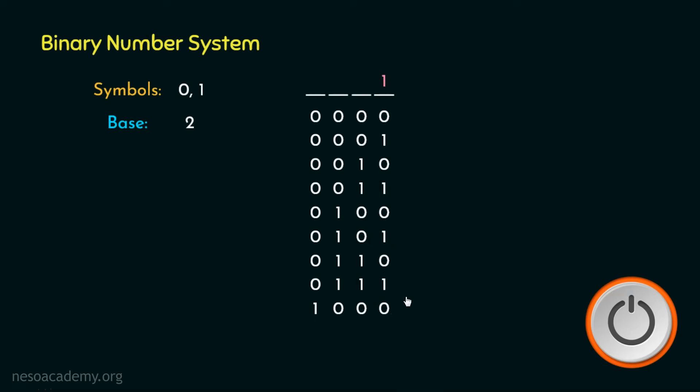Coming to the next bit's place, observe here the bits get changed in the interval of 2. Due to this, it holds the place value 2. In case of the next one, notice carefully, here the bits get changed in the interval of 4. Basically, first there are 4 zeros, then there are 4 ones, then there will again be 4 zeros and so on. Therefore, the value of this bit's place is 4.